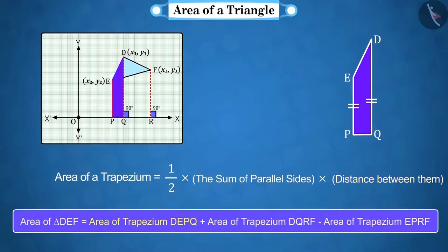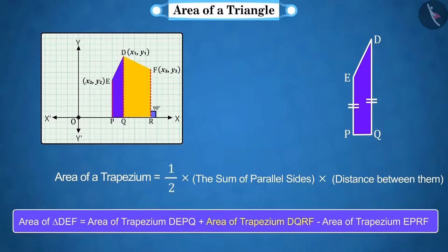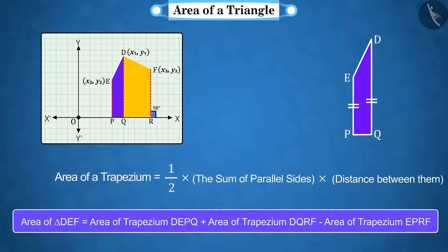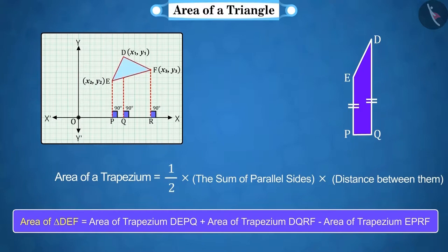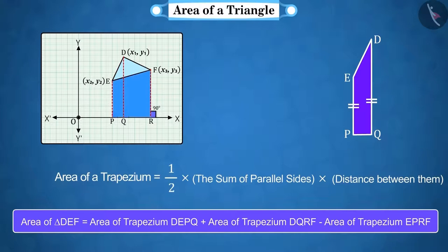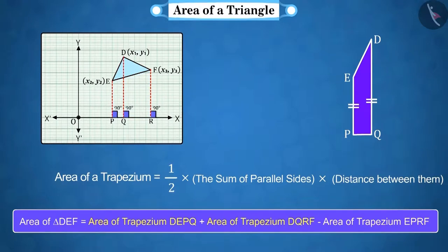If we add the areas of trapeziums DEPQ and DQRF, we get the area of the whole figure. But, we only have to find the area of triangle DEF. Hence, we deduct the area of the trapezium EPRF from the total area to determine the area of the triangle DEF.